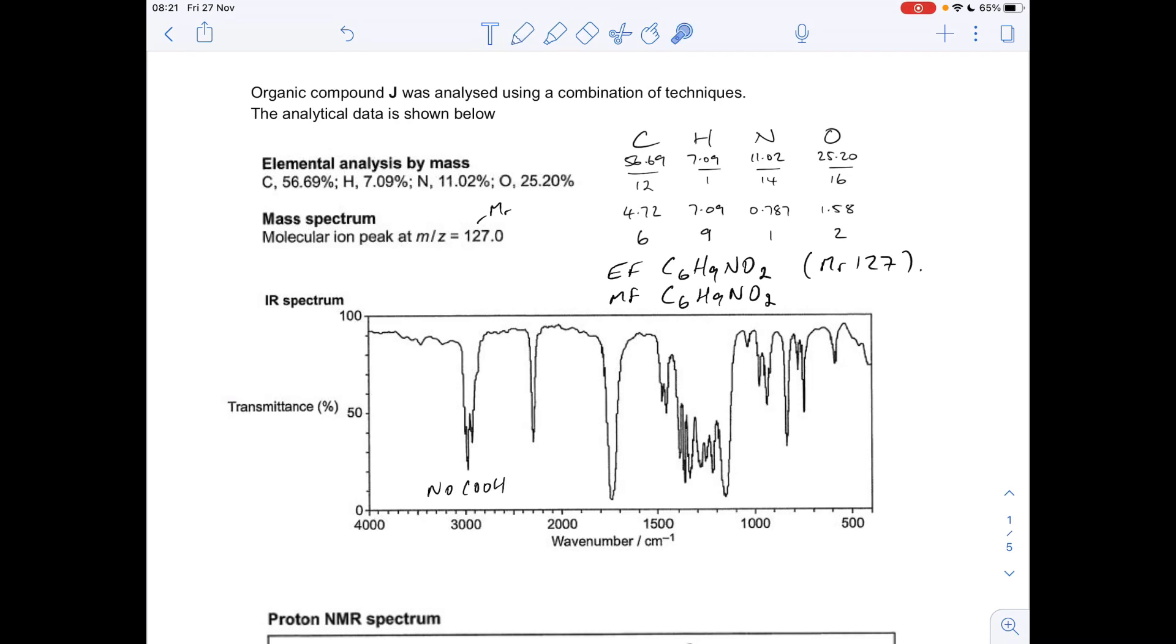OH group from an alcohol would be around here as well, starting just above 3000 and going up to about 3.5 thousand. We haven't got that either, so no OH. We've got nitrogen in the molecular formula, so amines with NH groups would be around here as well, and we haven't got that, so no NH either.